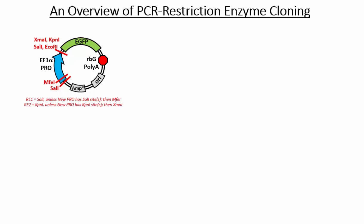Let's say I wanted to replace that promoter — maybe it's not strong enough, maybe it's too strong, or maybe I'd prefer a promoter inducible with a small molecule like tetracycline. There are many different ways to clone a new promoter into a plasmid; this is just one of them. What I want to do first is get rid of the old EF1α promoter, and the easiest way to do that is to cut the plasmid with restriction enzymes.